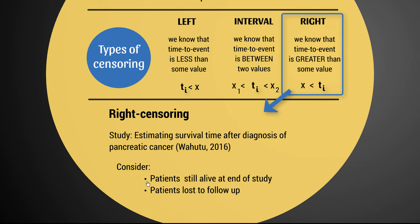In this particular study there were two different sources of right censoring. The first was patients still alive at the end of the study, as we just saw. But also patients that were lost to follow-up — for example, if someone is identified as having cancer and then moves interstate or overseas and we have no death information after that point. Again, they will have some minimum value for their time to event, but we won't know their exact time of death. So right censoring would occur there as well.